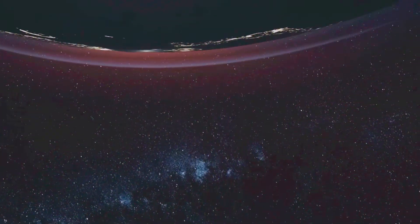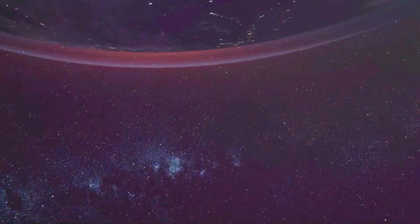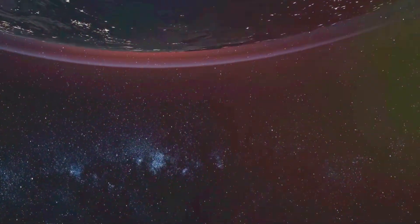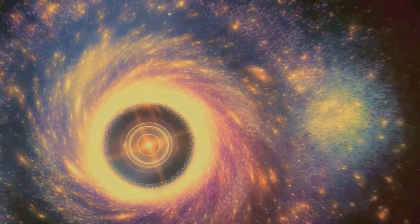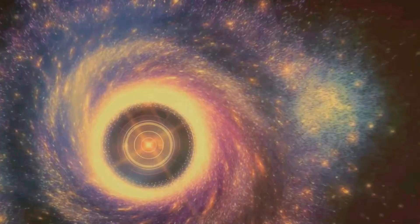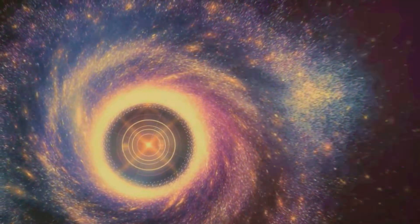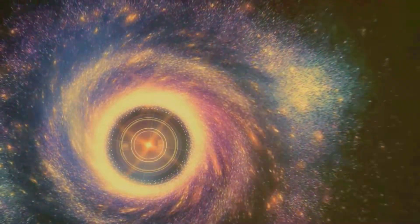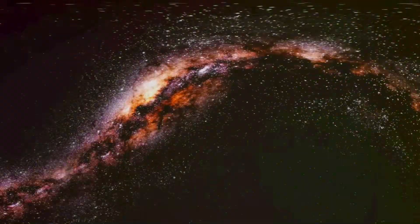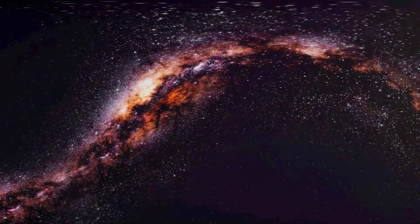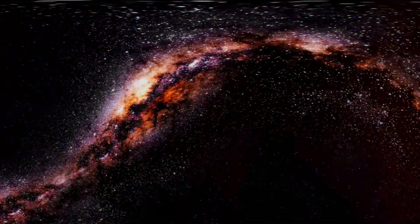But our journey doesn't end with Earth's orbit around the sun. In fact, it's just one leg of a much grander voyage. The sun, along with all its planets, including Earth, circles the center of the Milky Way galaxy at an astonishing 500,000 miles per hour. Our entire solar system is like a tiny boat, swept along in a vast galactic river. To complete just one lap around the Milky Way's core takes about 230 million years.